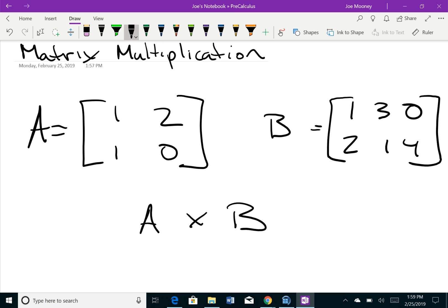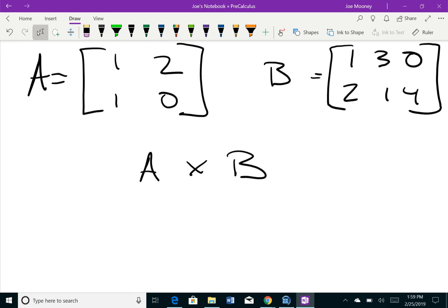But first things first: if you look at a simple way to check on it, let's analyze the dimensions of matrix A. It's got two rows and two columns, so matrix A is 2×2. Matrix B is two rows and three columns, so matrix B is 2×3.